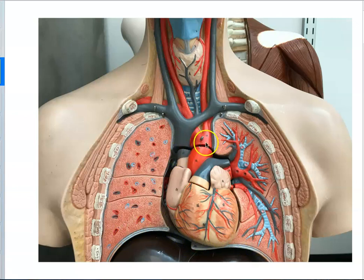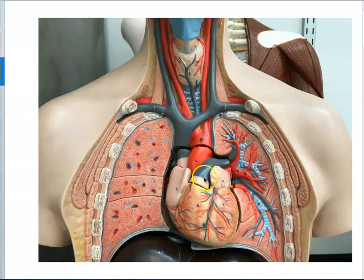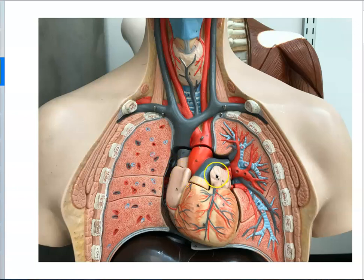These are what we call the great blood vessels of the heart — the blood vessels that are bringing blood into the heart and out of the heart. So the great blood vessels of the heart — this is going to be our base. We talk about the base of the heart; it's right here where the great blood vessels are coming out of. And the apex is this little point down here.